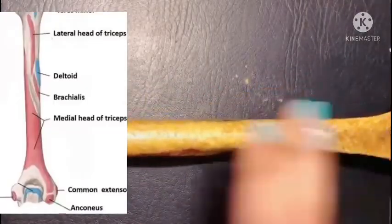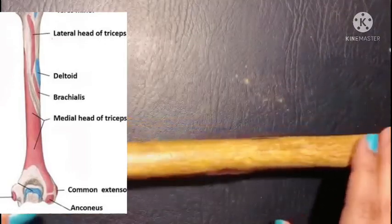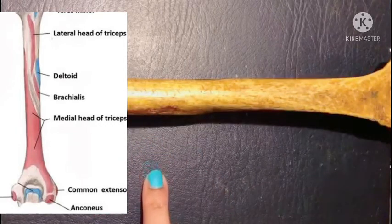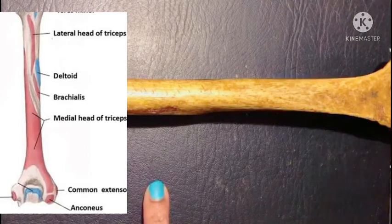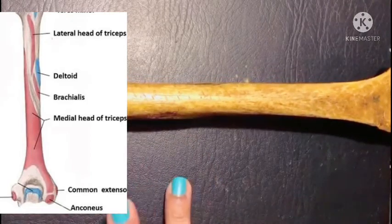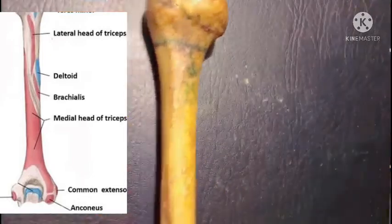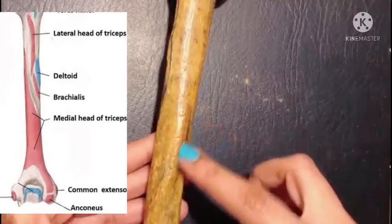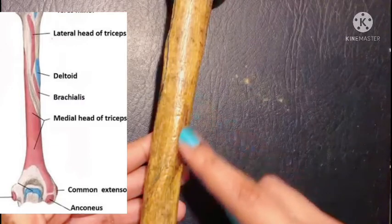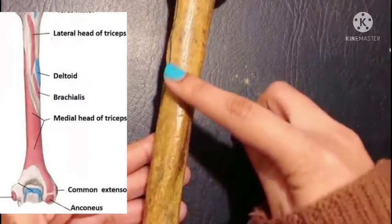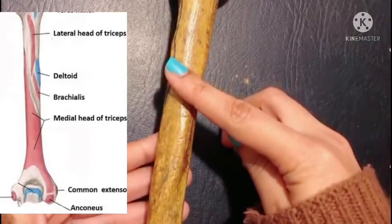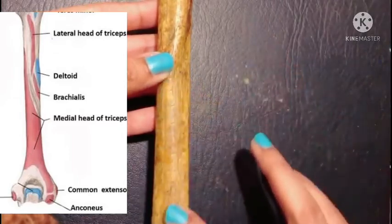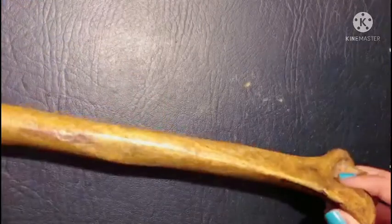Except for the posterior surface, where we have origins related to the triceps. Triceps has three heads — the long head originates from the infraglenoid tubercle of the scapula. The medial and lateral heads originate from the posterior surface of the humerus, which is divided by the radial groove. Above the radial groove gives origin to the lateral head, and below the radial groove gives origin to the medial head of triceps brachii.